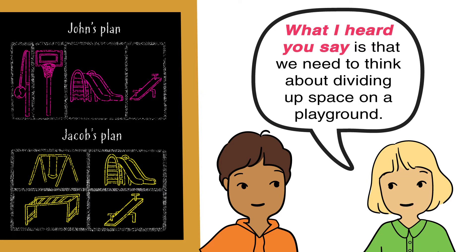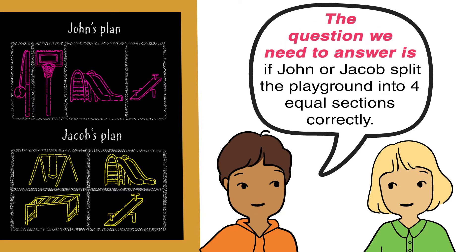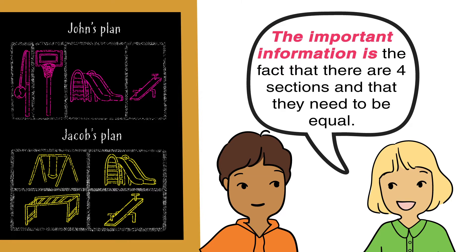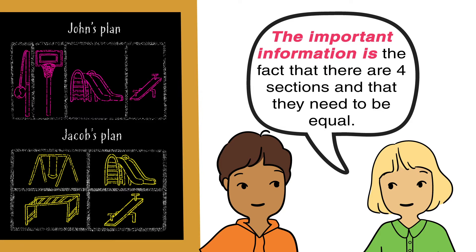What I heard you say is that we need to think about dividing up space on a playground. The question we need to answer is whether John or Jacob split the playground into four equal sections correctly. The important information is that there are four sections and that they need to be equal. For this task, we need to construct and critique arguments.